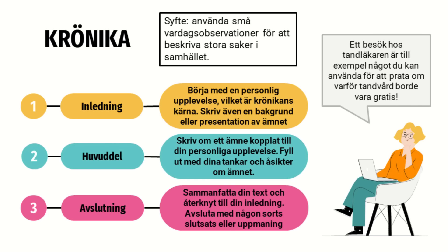Nu har vi kommit fram till en mycket friare texttyp: krönikan. Krönikan bygger på dina egna tankar och åsikter – du ska använda små vardagsobservationer för att kunna beskriva större saker i samhället som du tycker är intressant eller viktigt att prata om. Du börjar med en inledning där du presenterar din personliga upplevelse, och det är själva kärnan i krönikan. Se till att även skriva en bakgrund till ämnet. Sedan har du huvuddelen där du skriver om ämnet kopplat till din personliga upplevelse – till exempel en upplevelse hos tandläkaren som ingång för att prata om sjukvårdssystemet och varför tandvård borde vara gratis.